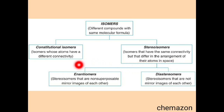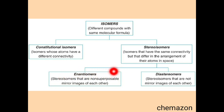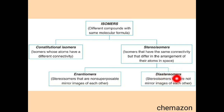Stereoisomers are again of two types: enantiomers and diastereomers. Enantiomers are non-superimposable mirror images of each other, and diastereomers are non-mirror images of each other. Now let us understand each of these terms in much more detail.